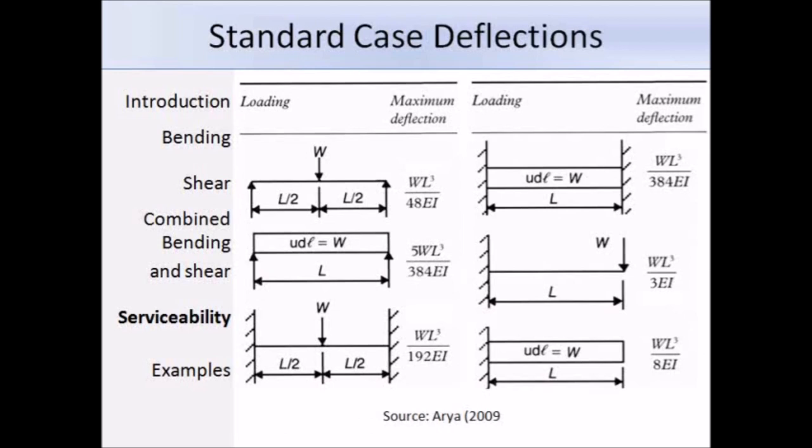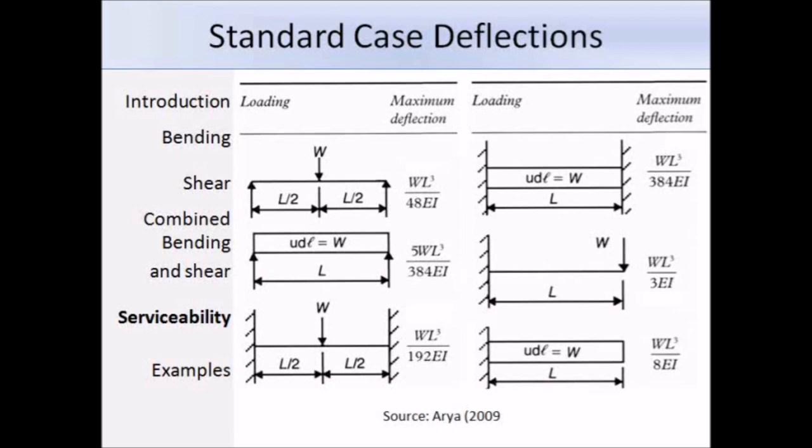Now that you know the deflection limits, you need to work out the actual deflection of the beam. Here are a number of standard cases for different conditions and different types of loading. For a simply supported beam with a point load at the centre, the deflection would be the unfactored load times the length cubed divided by 48 times the Young's modulus times the second moment of area.